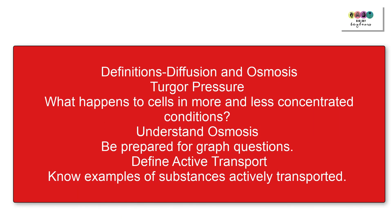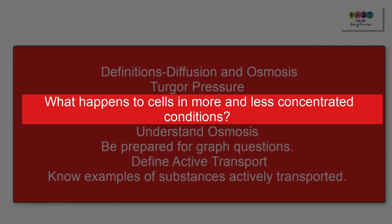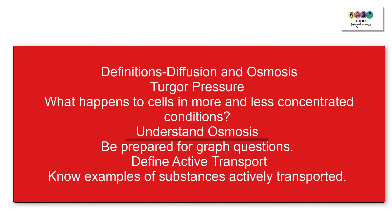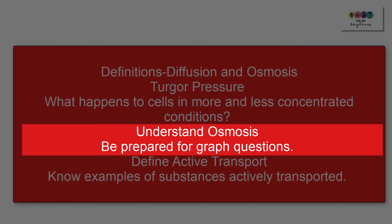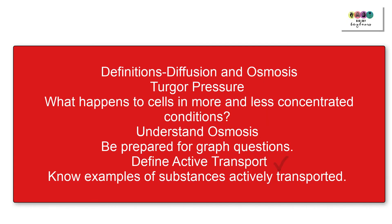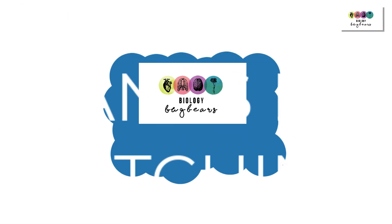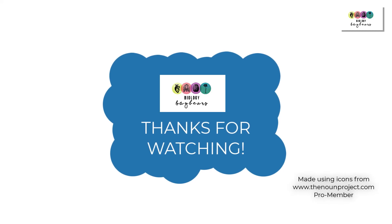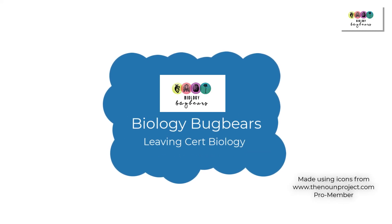That covers transport across membranes. Make sure you know your definitions of diffusion and osmosis — be word-perfect for osmosis. Be able to explain turgor pressure and know what happens to cells in more and less concentrated conditions. Understand osmosis well because you may get a graph question, which can be tricky. Be able to define active transport and give specific examples of substances actively transported. Good luck with your revision — do past papers, check the official marking schemes, and don't forget your textbook.